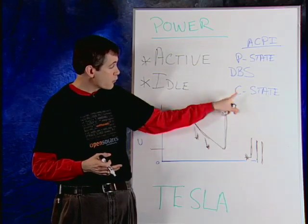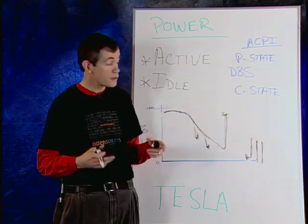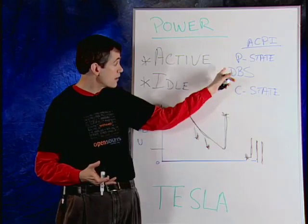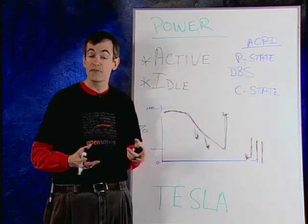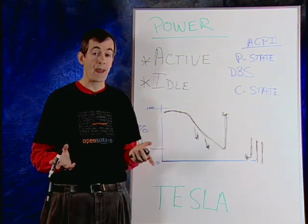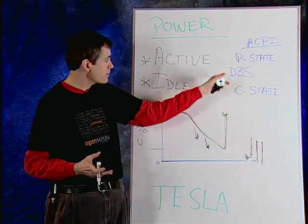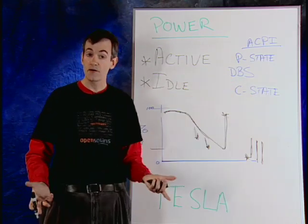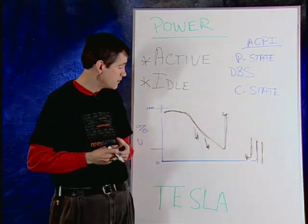We're also working on the c-state area to improve the operating system support there. We're helping with the area of p-states — this is a feature in our processor called DBS, which stands for demand-based switching. We're helping in all of these areas to optimize OpenSolaris to take advantage of these power features.